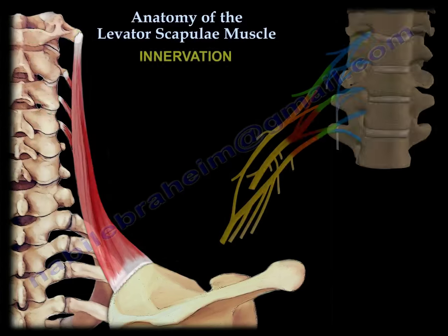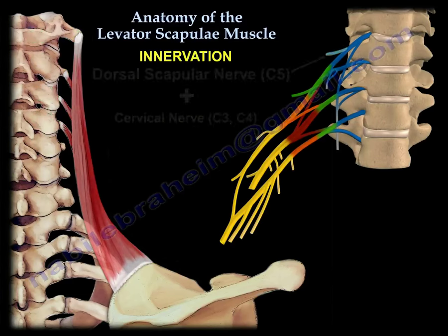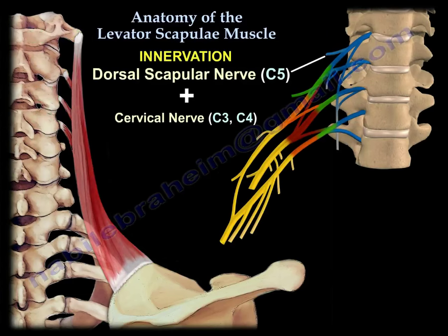Nerve supply: the dorsal scapular nerve, which is C5, and the cervical nerves C3 and C4.